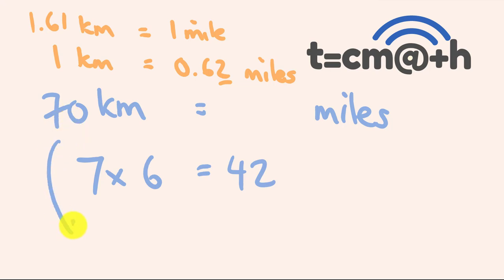So 70 divided by 50 is equal to 1.4. So what do we get? We add these two guys together, we get 43.4 miles, and that is about 99% accurate.